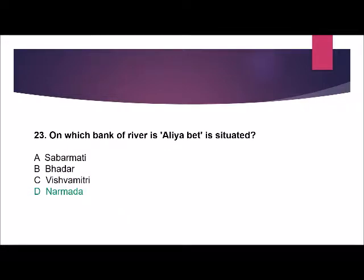Question number 23: On which bank of which river is Aliyabet situated? Options are: Sabarmati, Bhadar, Vishwamitri, or Narmada. The correct answer is the Narmada river.